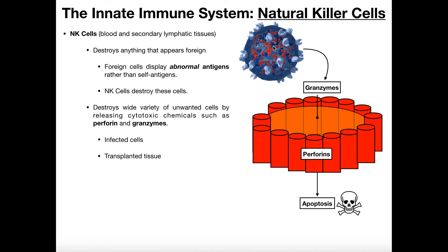If that wasn't enough, the natural killer cells go a step further — they release enzymes called granzymes. Granzymes move through the hole and into the cell, where they stimulate apoptosis. So it's not a violent explosion; it's a controlled death. Apoptosis is controlled or programmed cell death, meaning the cell will die and all of its contents can be recycled. The granzymes induce apoptosis, and the abnormal cell will die.